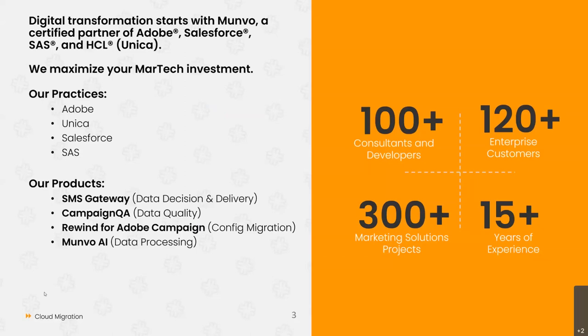After working more than 15 years on different projects, we've built tools useful for customers. Our flagship products include SMS Gateway, which allows bi-directional messaging — doing data decisioning and delivery focused on SMS today, with a future move toward generalized messaging. We also have Campaign QA, focused on data quality, ensuring your marketing automation system is sending the correct message to the right audience. And we have Rewind for Adobe Campaign, which handles environment replication — pushing configuration from environment to environment across multiple Adobe instances.